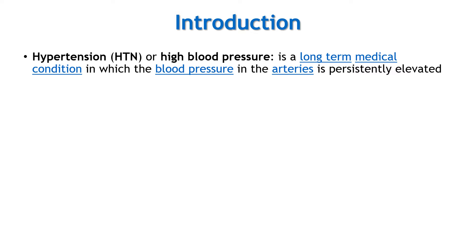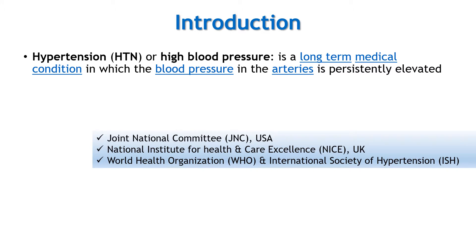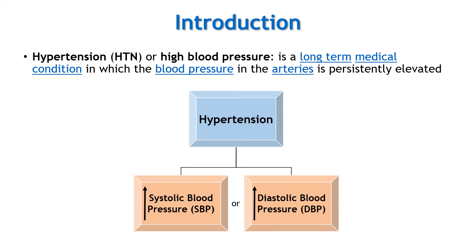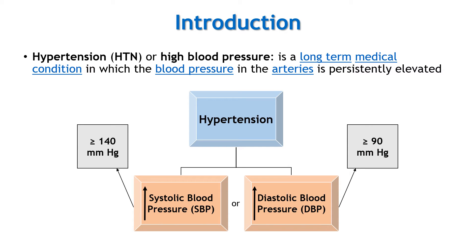What is the cut-off value for high blood pressure? Blood pressure has two domains: systolic and diastolic, and its unit is millimeter of mercury. There are various guidelines available, like Joint National Committee USA, National Institute for Health and Care Excellence UK, World Health Organization, and International Society of Hypertension. According to these guidelines, a person is hypertensive when systolic blood pressure is 140 mmHg or more, or diastolic blood pressure is 90 or more, or both. However, JNC 8th report has raised the defining level of systolic blood pressure to 150 for individuals above 60 years of age.